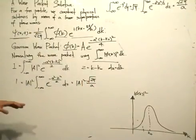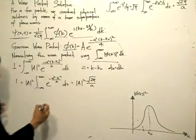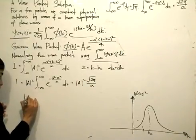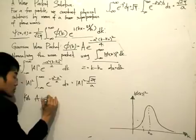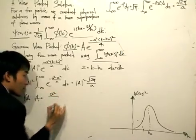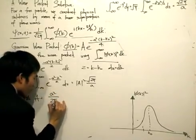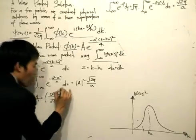And then after that, I'll just rearrange for A, and I'll ultimately get A equals (a²/2π) raised to the power of one quarter.